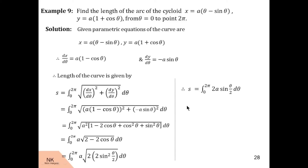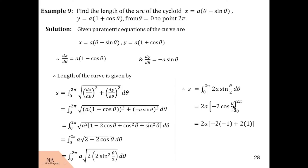So s equals the integral of 2a·sin(θ/2) dθ over the limit 0 to 2π. Since 2a is constant, the integral of sin(θ/2) is −cos(θ/2)/(1/2) = −2cos(θ/2). Substituting the limits: cos(2π/2) = cos π = −1, and cos(0) = 1. We get 2a·(−2)·(−1 − 1) wait — evaluating: −2·(−1) + (−2)·(−1) = 2 + 2 = 4, so 2a · 4 = 8a. Thus 8a is the required length of the cycloid.